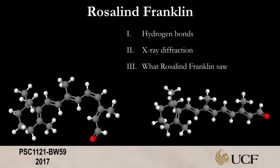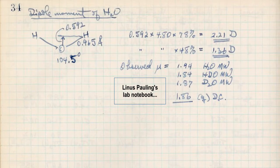Good afternoon. This is a mini lecture D in honor of Rosalind Franklin, and we'll talk about some of her work. Last time we were talking about Linus Pauling and the electronegativity method, or the method of calculating electronegativity.